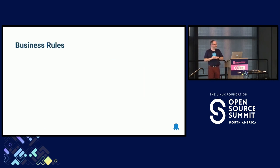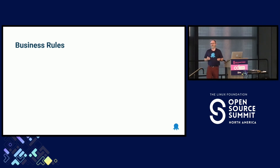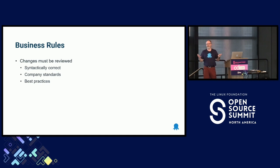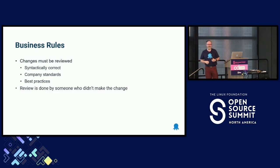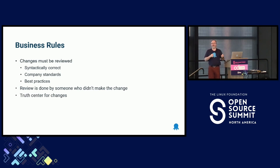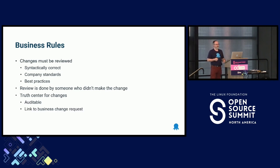The simple fact was the business rules we came up with initially weren't super earth-shattering. Changes must be reviewed. Changes must be reviewed by someone who didn't make the change — that was earth-shattering for us. When it came to the database, we needed to have a truth center for our changes. That was the big one. Something that was auditable and that we could link back to a business change request. We also needed to have a consistent process across all our environments.